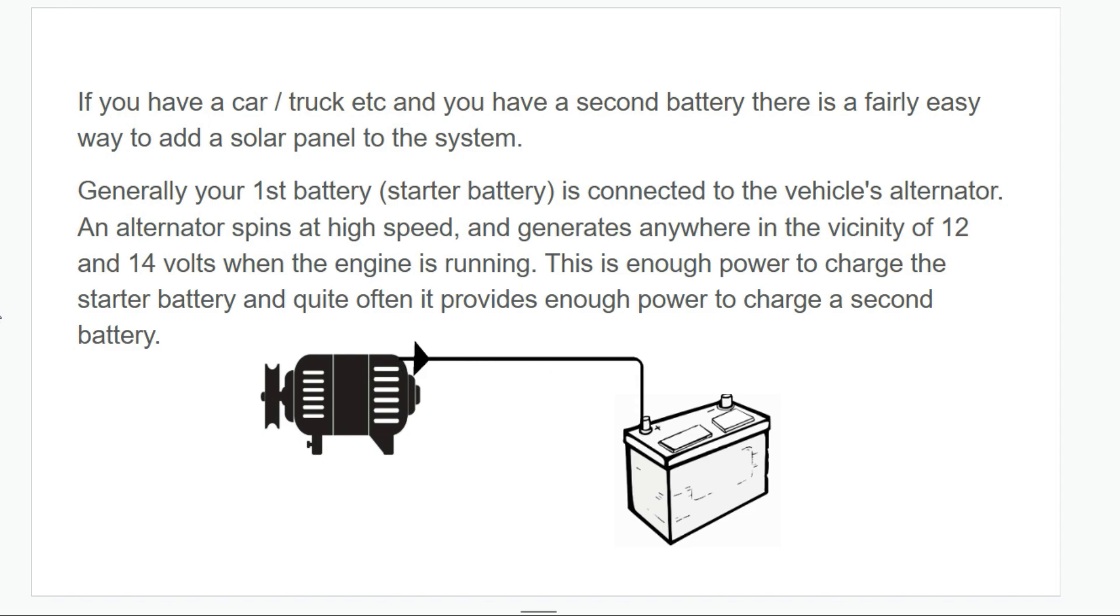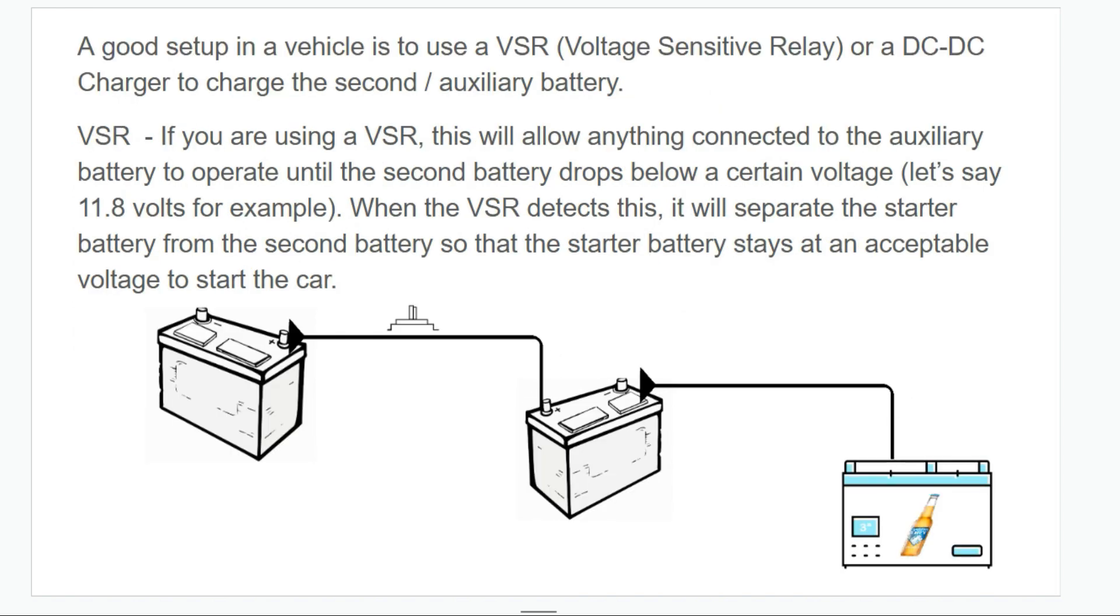Generally your first battery, your starter battery we'll call it, is connected to the vehicle's alternator. The alternator spins at high speed and generates voltage somewhere in the vicinity of 12 to 14 volts when the engine's running. This is enough power to charge the starter battery and quite often it's enough to power a second battery as well.